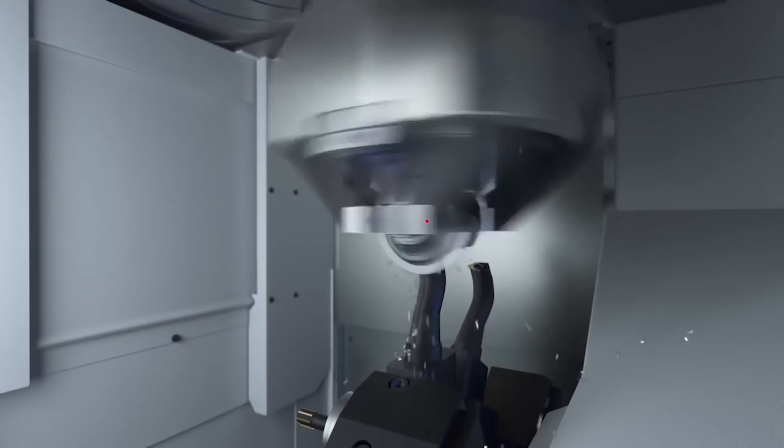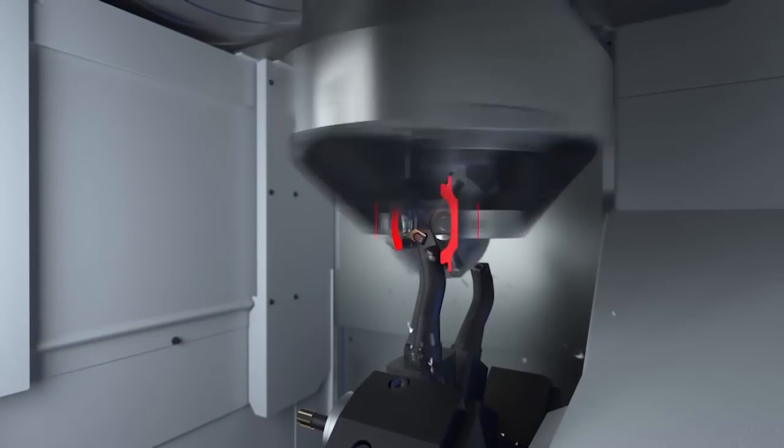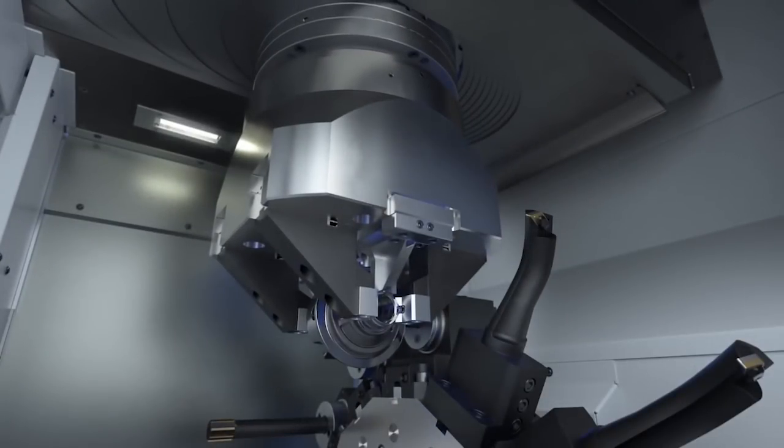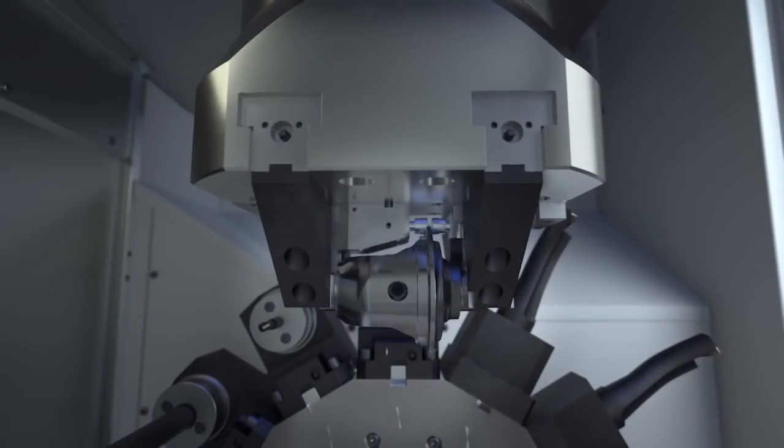The final machining of the spherical cap on the inside as well as the bores, also performed with a single clamping operation, is carried out on a VL6 turning machine.